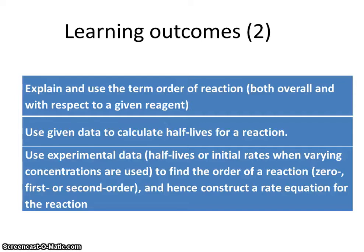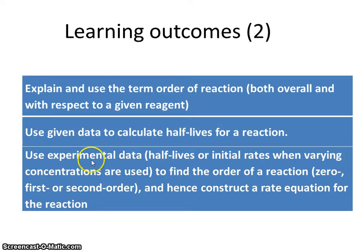This is the second revision video on rates of reaction. In the first video we looked at how rate of reaction can be calculated from experimental data, including the kinds of properties of reaction mixtures that can be monitored using simple laboratory apparatus. In this second video we'll explain and use the term order of reaction in the context of a rate equation, use data to calculate half-lives, and use experimental data to find the order of a reaction and hence construct a rate equation.